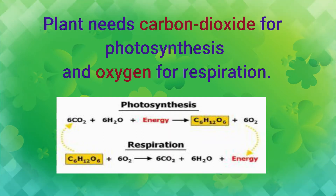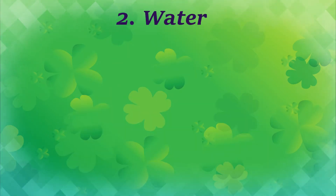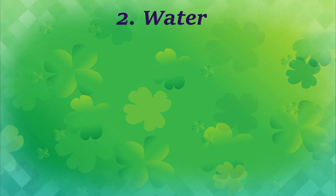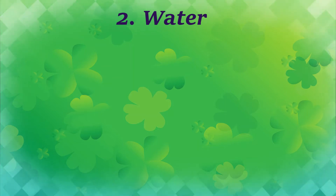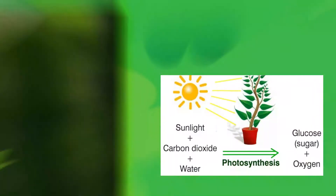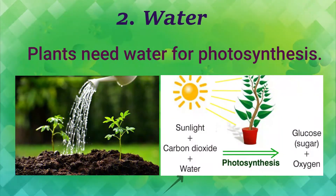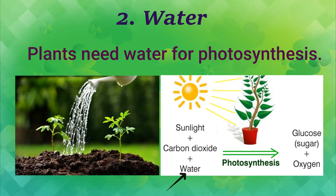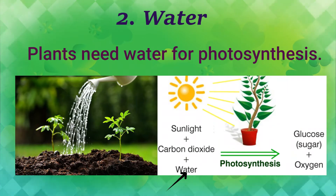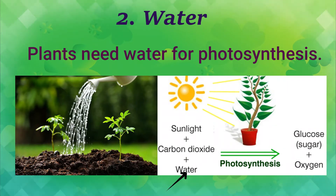The next very important need of a plant is water. As we know, all living things need water and cannot survive without it. Plants need water for photosynthesis — during photosynthesis, carbon dioxide and water combine together to form glucose, which is the food for the plant.